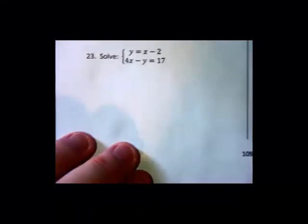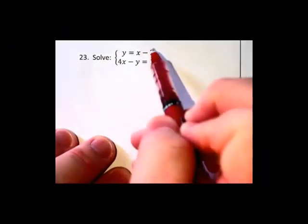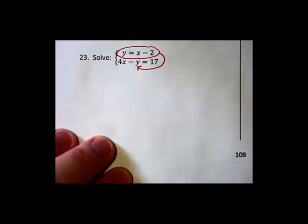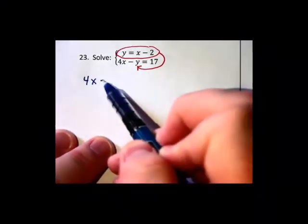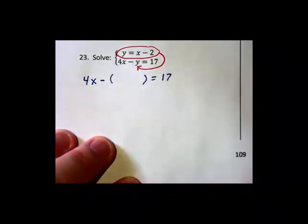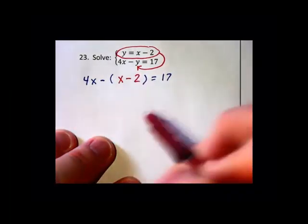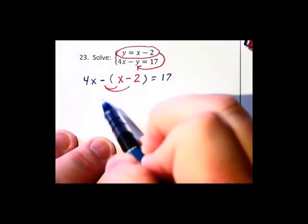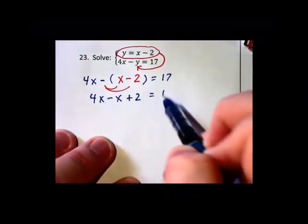Solve this system. Well, since the first equation is set up as a y equals, I want to do substitution. Substituting the first equation into the second, that will give us 4x minus y, which we'll substitute in, equals 17. And the y that we're substituting in becomes the x minus 2. We're going to have some distribution to do on the left there, so this will become 4x minus x plus 2 equals the 17.